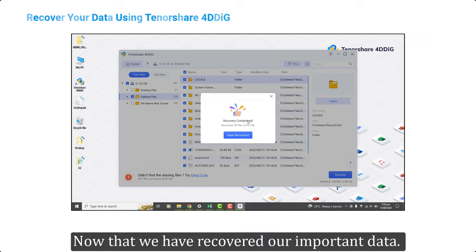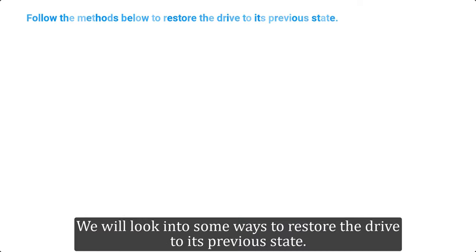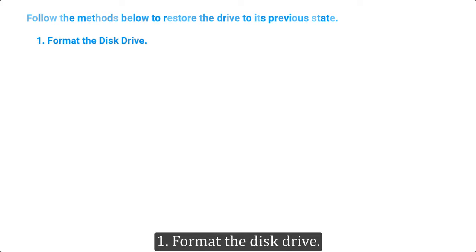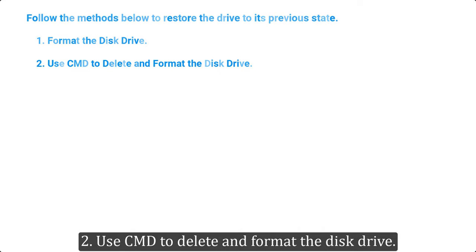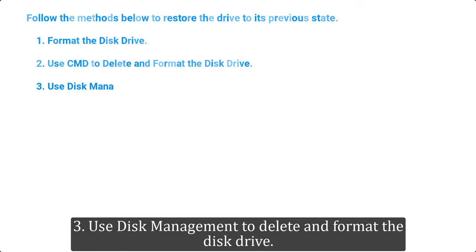Now all your data on the ESD drive has been recovered. Now that we have recovered our important data, we will look into some ways to restore the drive to its previous state: Method 1 — Format the disk drive. Method 2 — Use CMD to delete and format the disk drive. Method 3 — Use Disk Management to delete and format the disk drive.